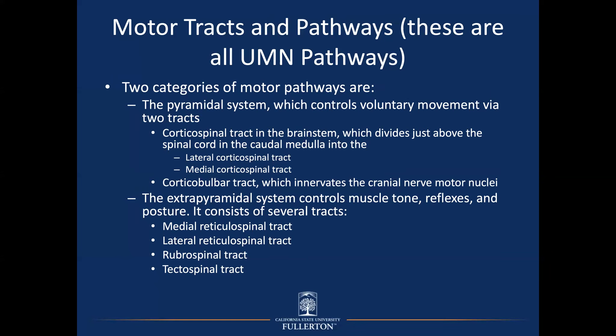One part of the pyramidal system is the corticospinal tract. The name shows what it connects: it goes from the cortex — specifically the motor strip — down to the spinal cord, where it will synapse on a lower motor neuron or alpha motor neuron. We can divide the corticospinal tract at the level of the cord: it descends as one tract on each side all the way down to the caudal medulla. At that point, 80% of the neurons in the corticospinal tract decussate — they cross to the other side. The tract formed below that decussation is referred to as the lateral corticospinal tract, found in the spinal cord.